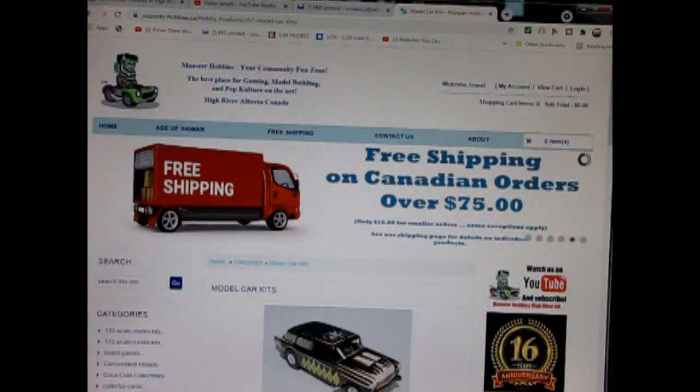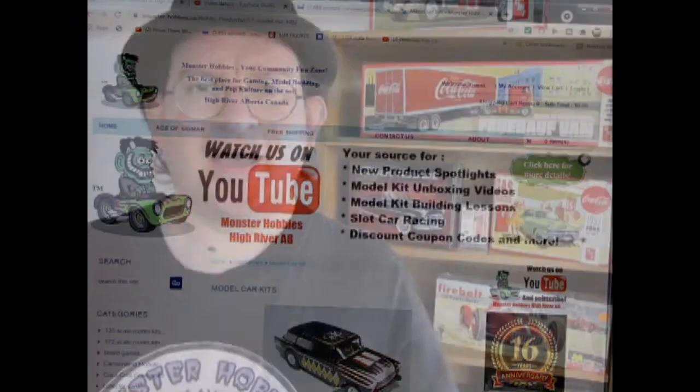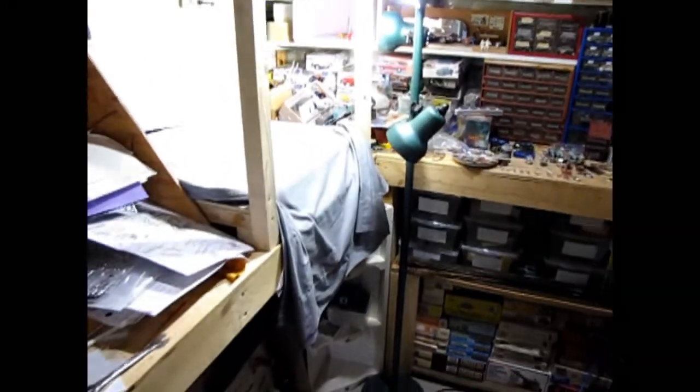Today we will be looking at the 1973 Ford Mustang Mach 1 Street Machine by AMT Ertl. Now this one's out of my own personal collection, however you can see all of our available model kits at www.monster-hobbies.ca. I will leave a link in the description below. Now let's go down to our bench and see what's in the box.